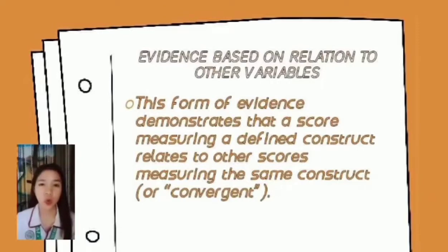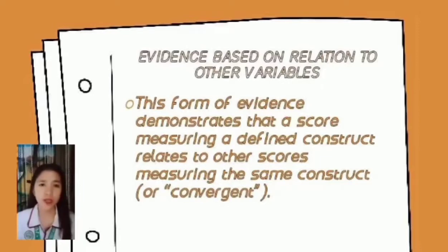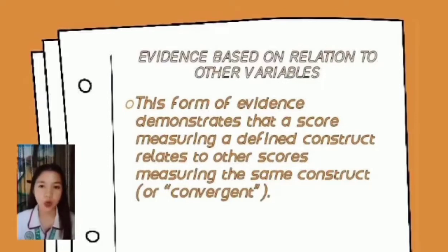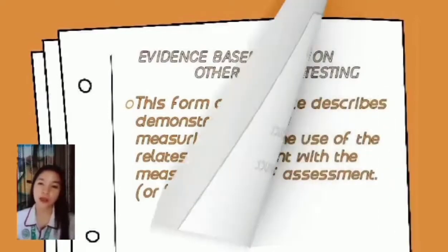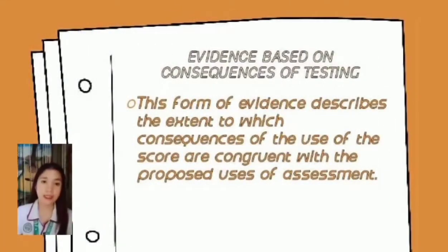The fourth validity evidence is evidence based on relation to other variables. It demonstrates that a score measuring a defined construct relates to others measuring that same construct — called convergent validity — and does not relate to others measuring different constructs — called discriminant validity. Instructors can gather several different types of data about student ability or knowledge of a particular construct in order to generate this type of validity evidence.